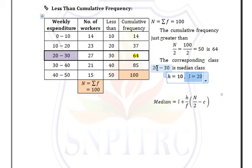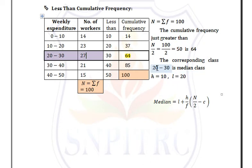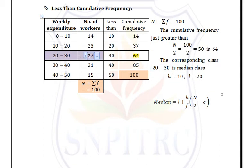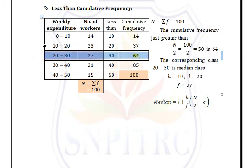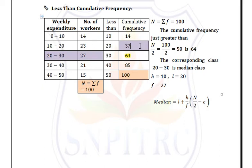The frequency corresponding to the median class is 27, so F = 27. C means the cumulative frequency preceding the median class — that is, the cumulative frequency of the previous row. The previous row's cumulative frequency is 37, so C = 37.